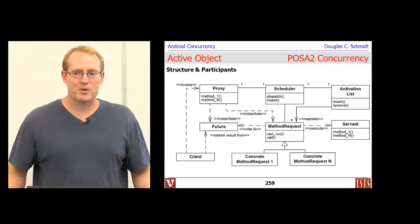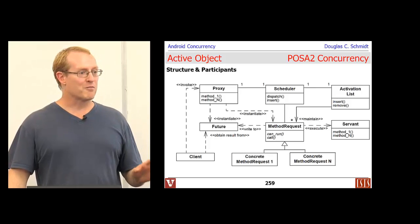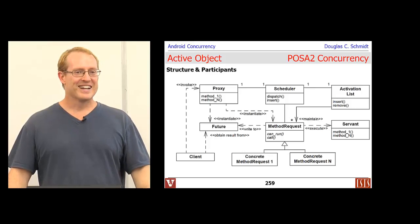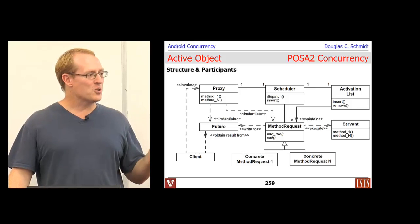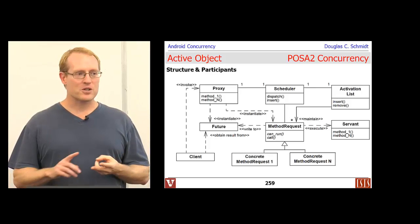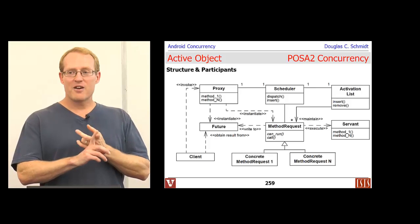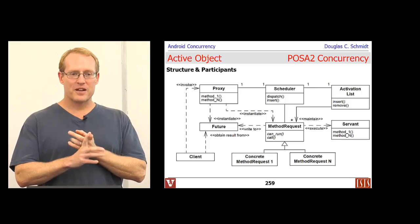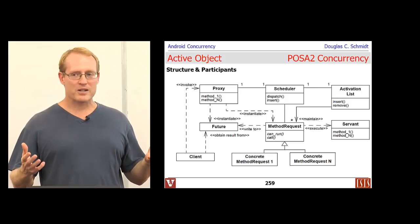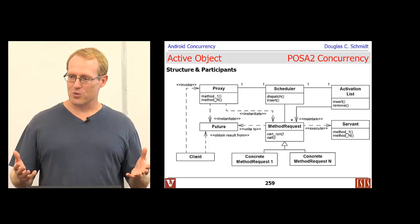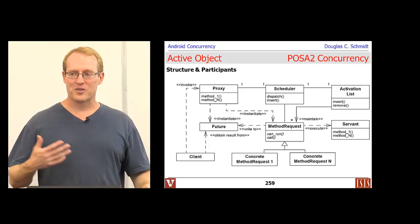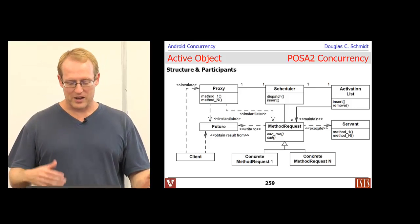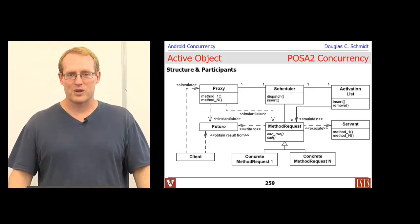Here is the structure of the active object pattern. There are a lot of moving parts, so we'll step through them one at a time. I'm going to explain it in two ways — first in terms of everyday experiences you may have had, using a metaphor, and then I'll talk technically about what's going on. The metaphor is going to a fast food restaurant to get lunch.